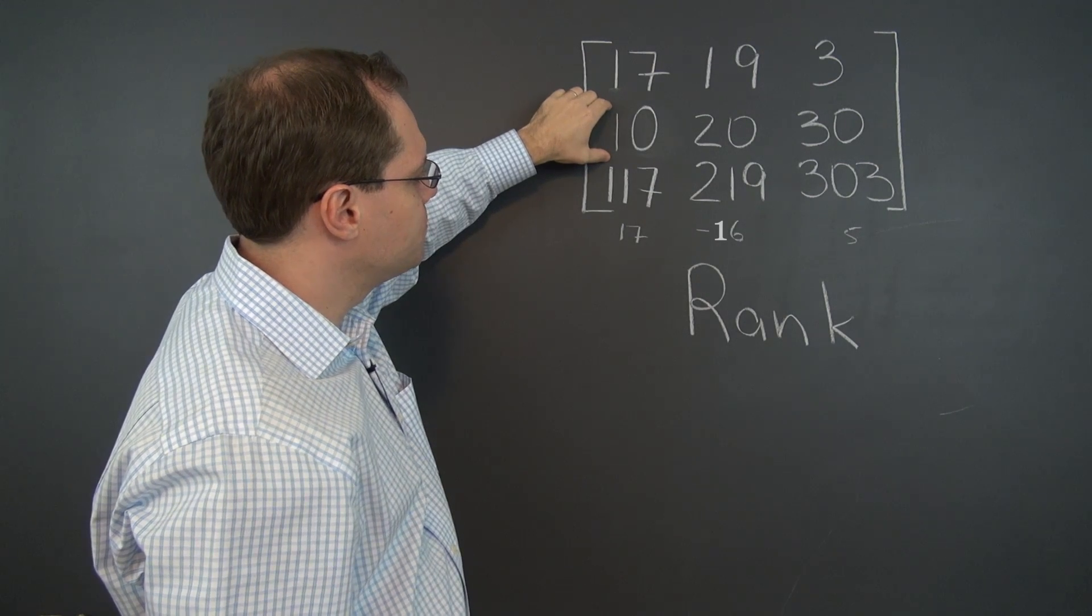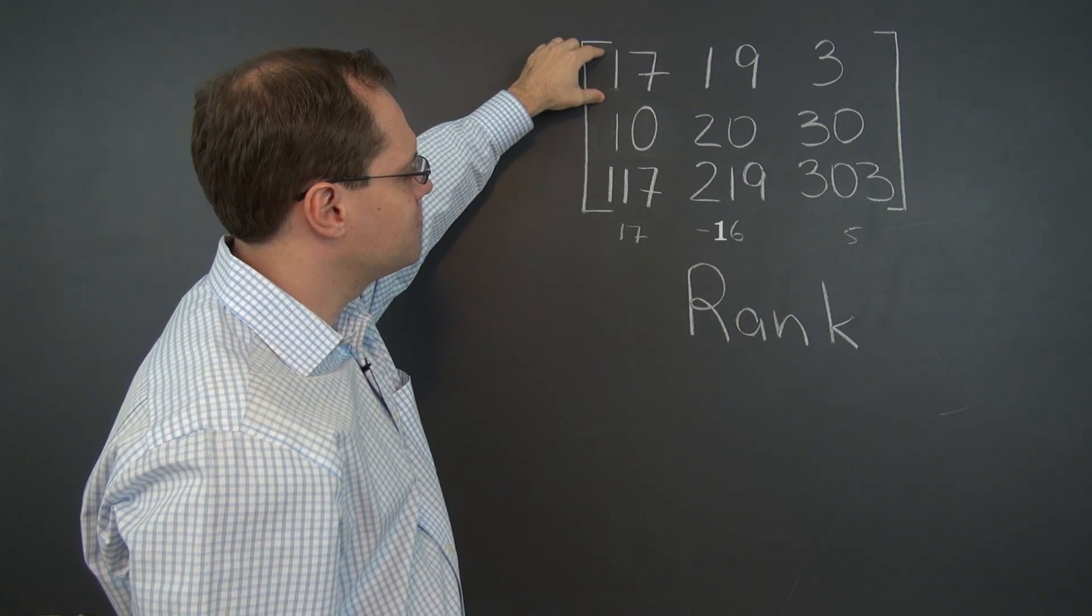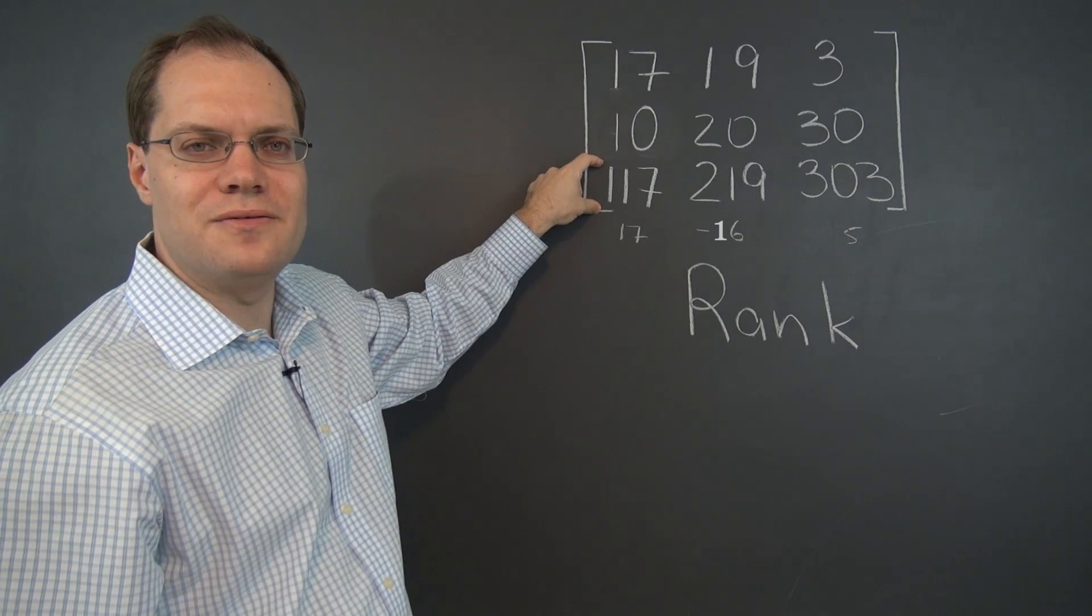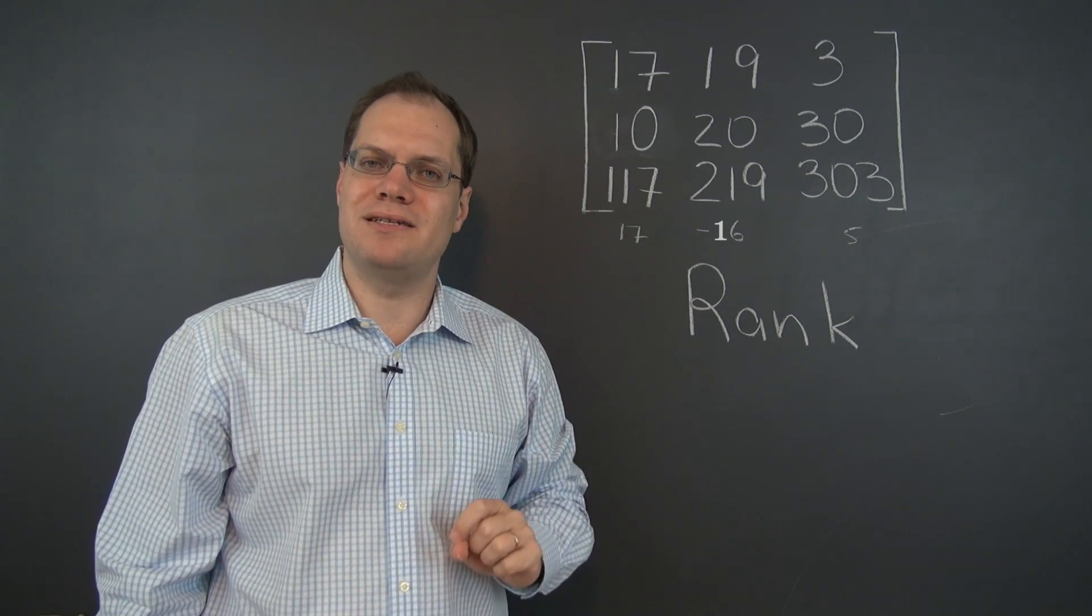And that relationship is that 10 of this row plus this row equals this row. 10 of row 2 plus row 1 equals row 3. So, the rows are linearly dependent.